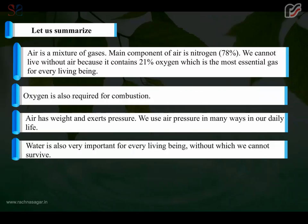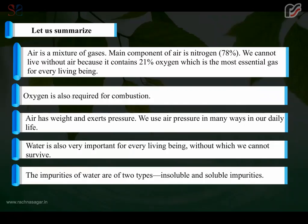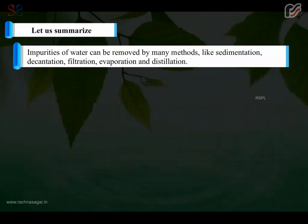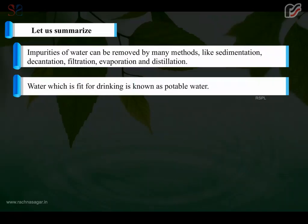Water is also very important for every living being, without which we cannot survive. The impurities of water are of two types, insoluble and soluble impurities. Impurities of water can be removed by many methods like sedimentation, decantation, filtration, evaporation and distillation. Water which is fit for drinking is known as potable water.